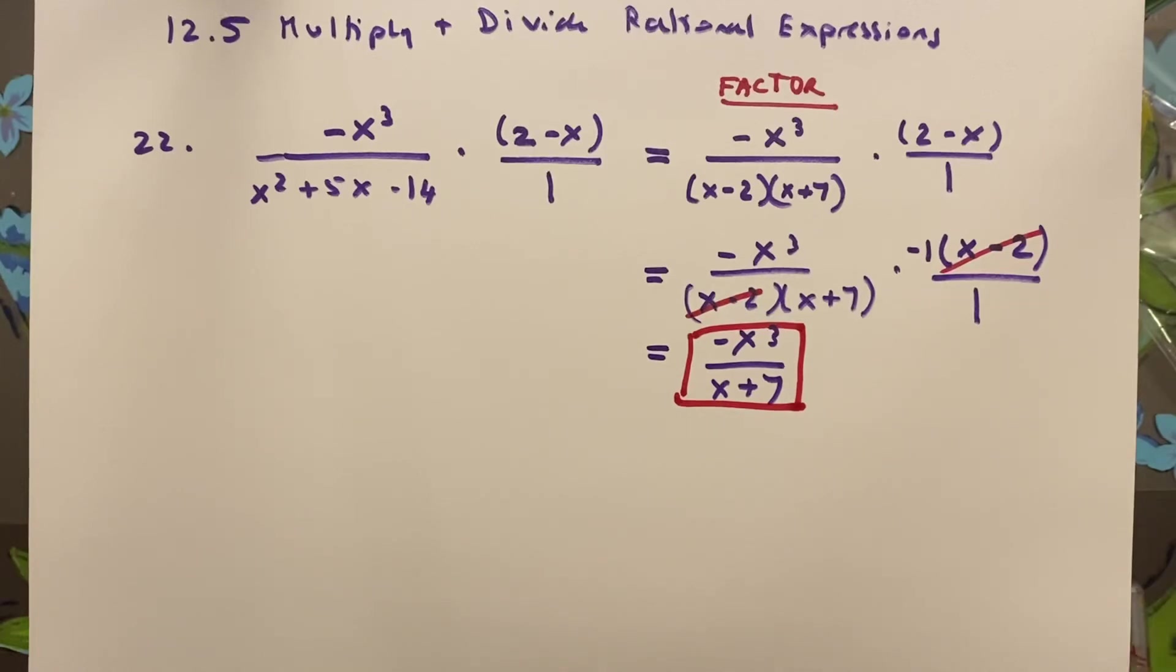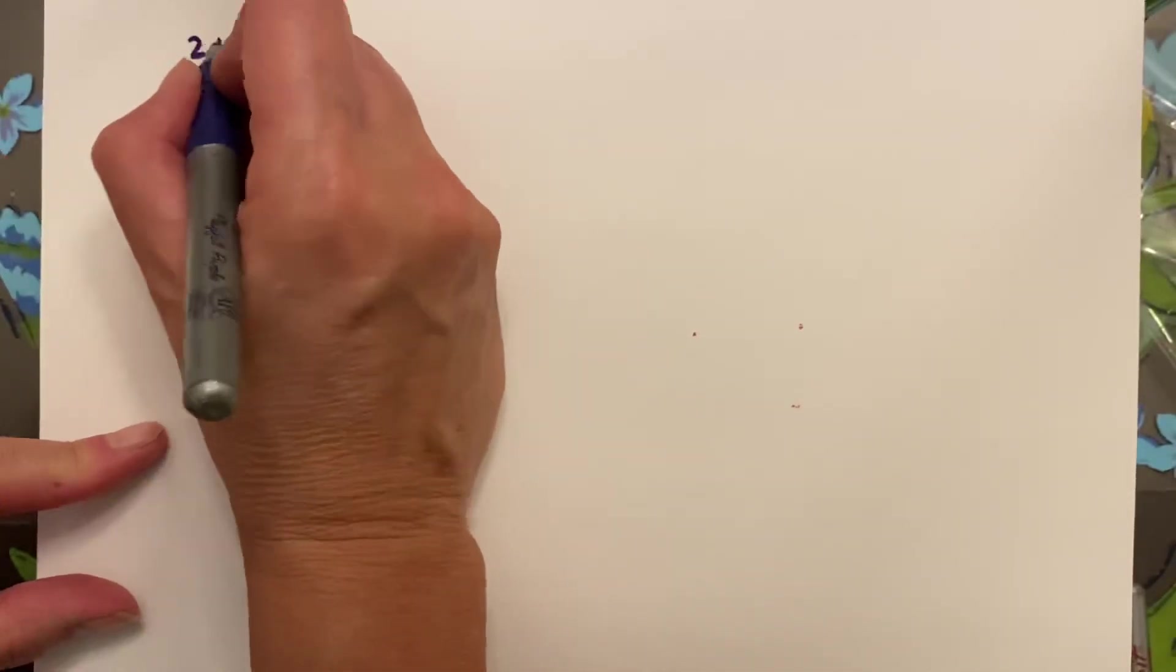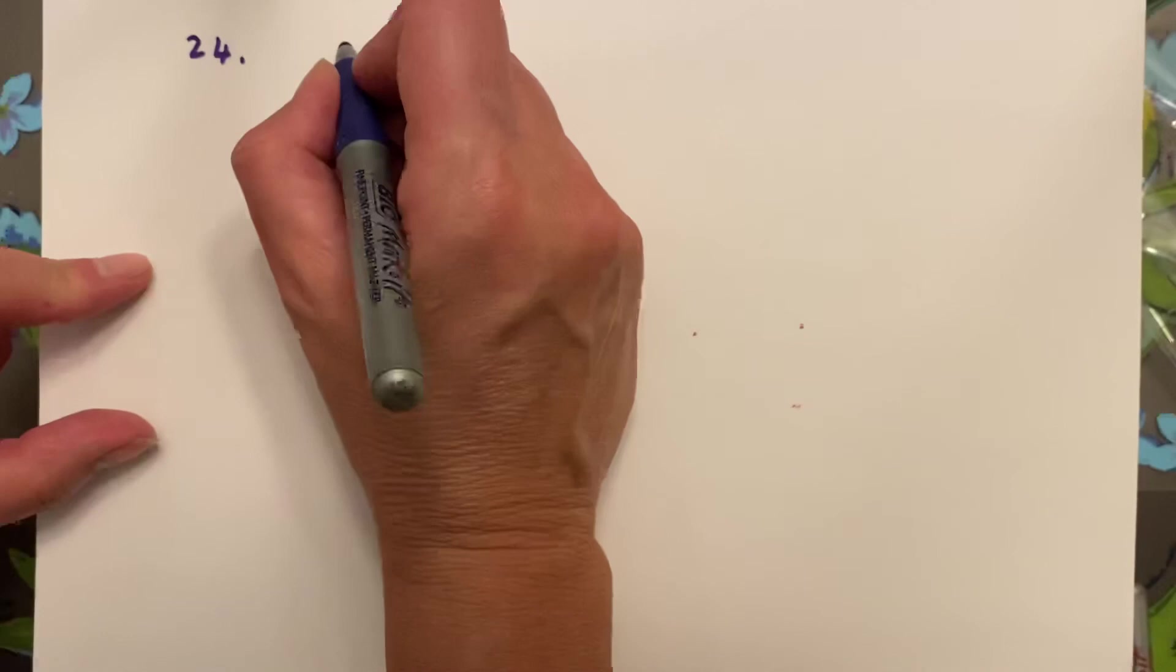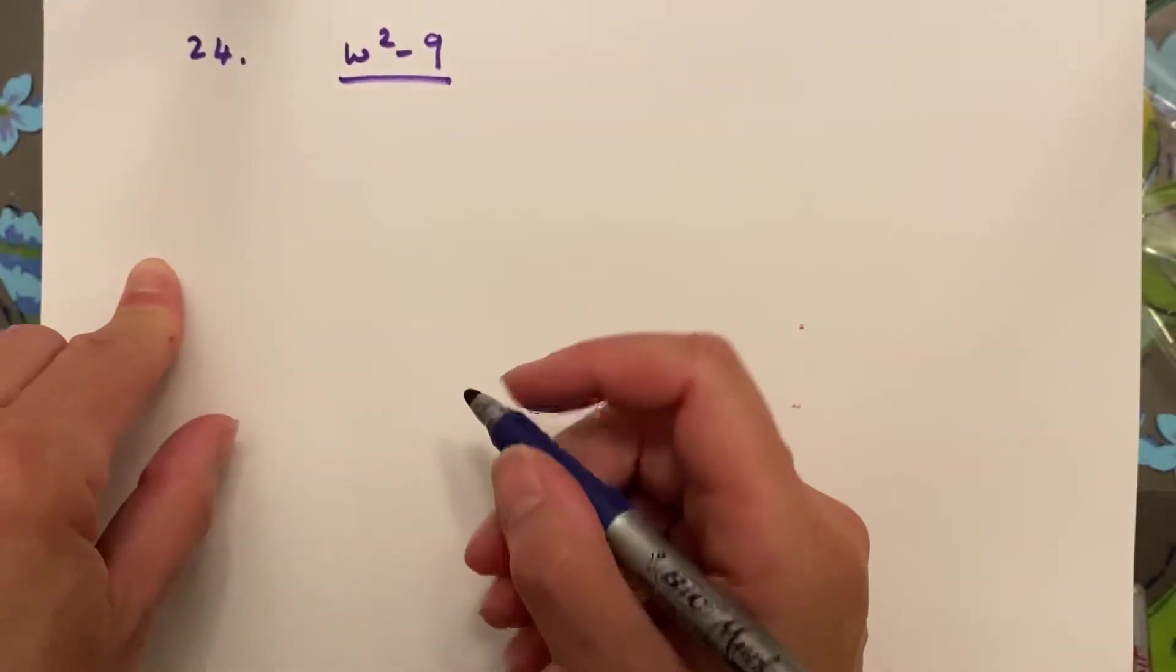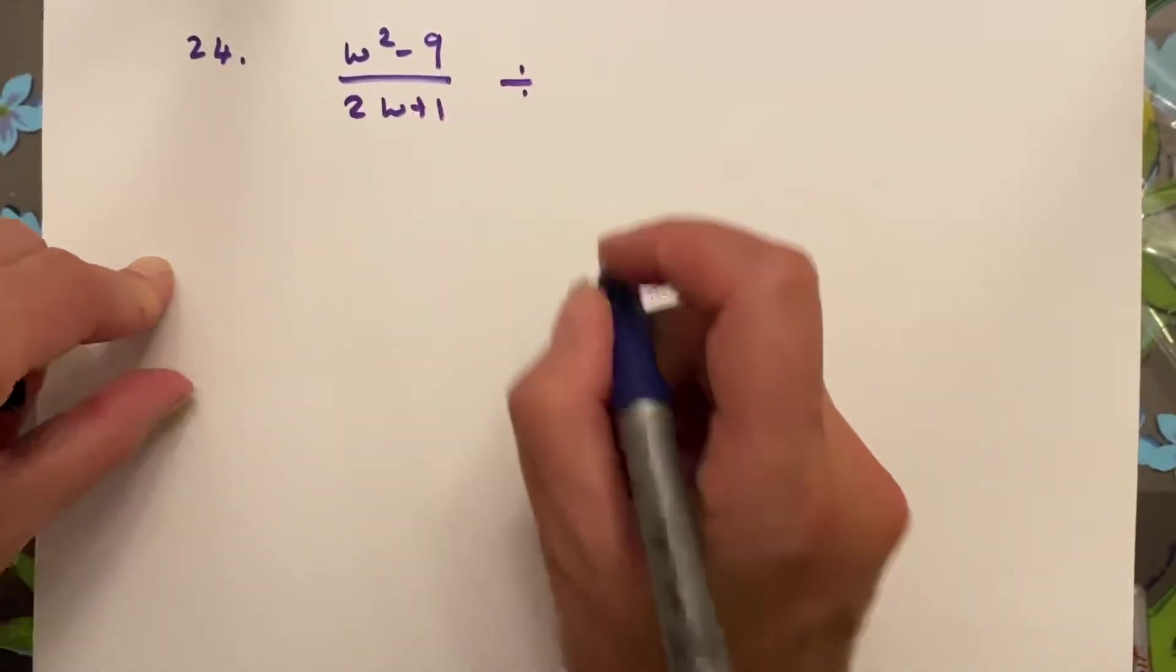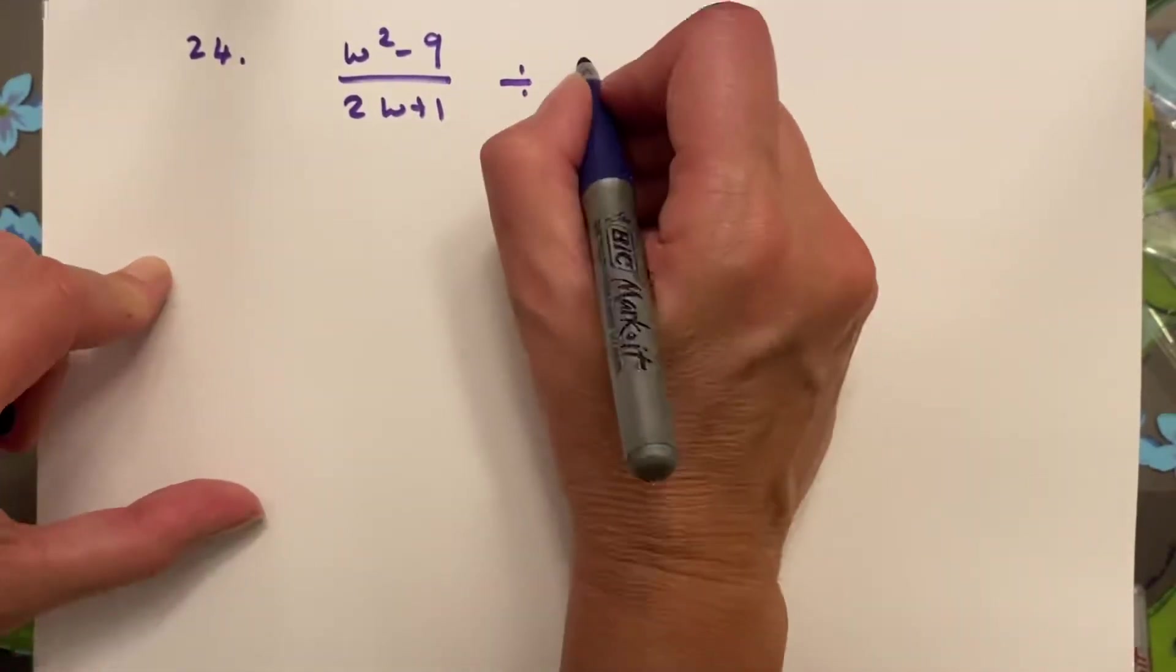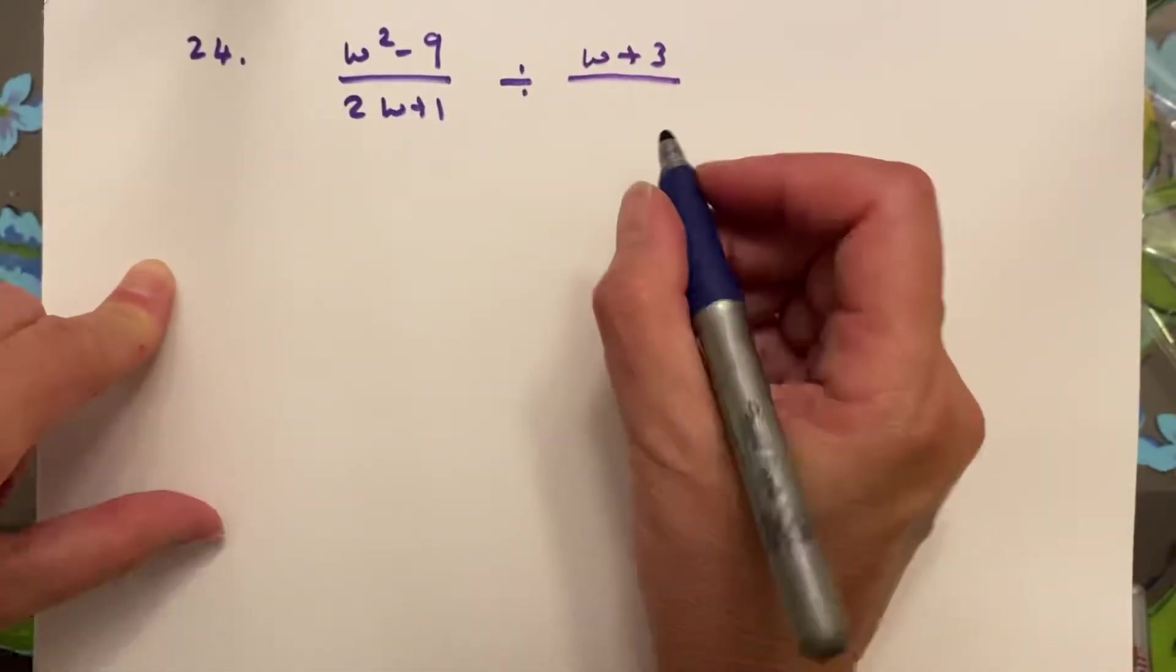Okay, I'm going to do number 24 on a different piece of paper because I may need a little more space for it. Number 24 is a division: w squared minus 9 over 2w plus 1, and I'm dividing by w plus 3 over 4w squared minus 1.